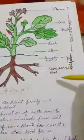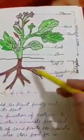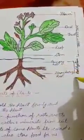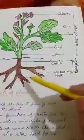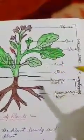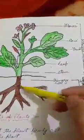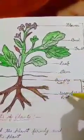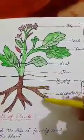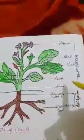Plants have mainly two systems: root system and shoot system. The system that is present under the ground is called the root system and it mainly contains the roots and root hairs. Whereas the system that is present above the ground is called the shoot system. The root system mainly contains the main roots, called the primary roots, and the roots which arise from the primary roots are called the secondary roots.